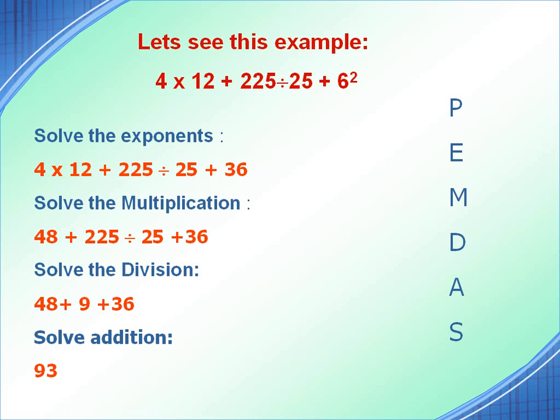Now let's see one more example with exponents in it. Here we have 4 × 12 + 225 ÷ 25 + 6². Simply follow the rule PEMDAS. You can see there is no operations within parenthesis, but we have exponents. So solve the exponents first, and we will get 4 × 12 + 225 ÷ 25 + 36.